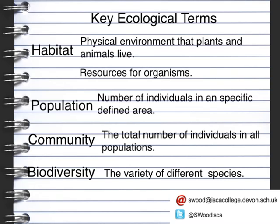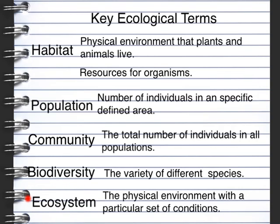The last term we're going to focus on is an ecosystem. This is similar to a habitat — it's the physical environment that plants and animals live in, plus all the organisms, and the physical environment has a specific set of conditions. It could be an aquatic ecosystem such as a pond or a river, a desert ecosystem that would be fairly dry with a lack of rainfall, or a woodland ecosystem that may have a selection of different habitats within it. The key thing with an ecosystem is that it can support itself without any influx of external factors, where the only external factor it can have is the sun.